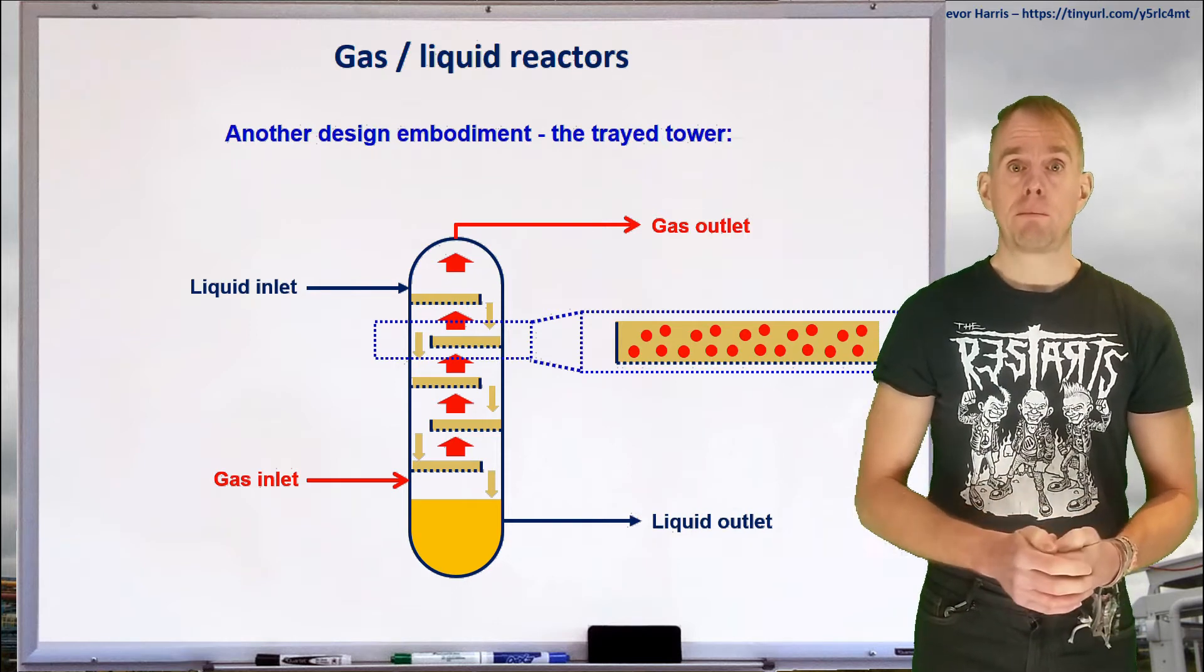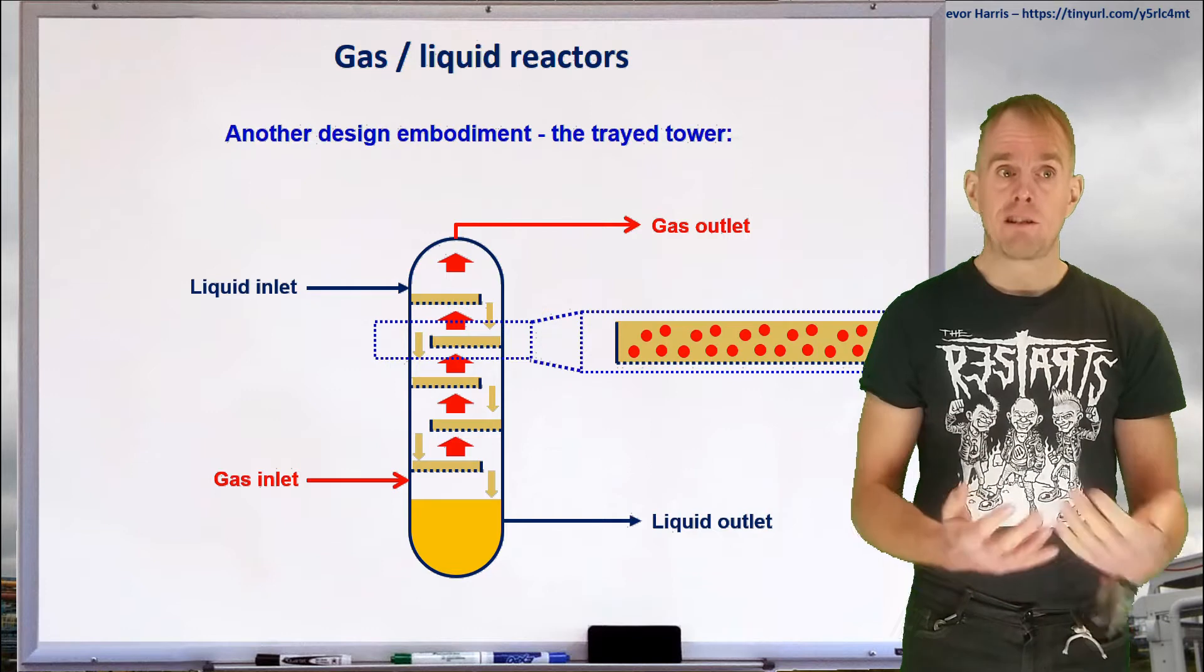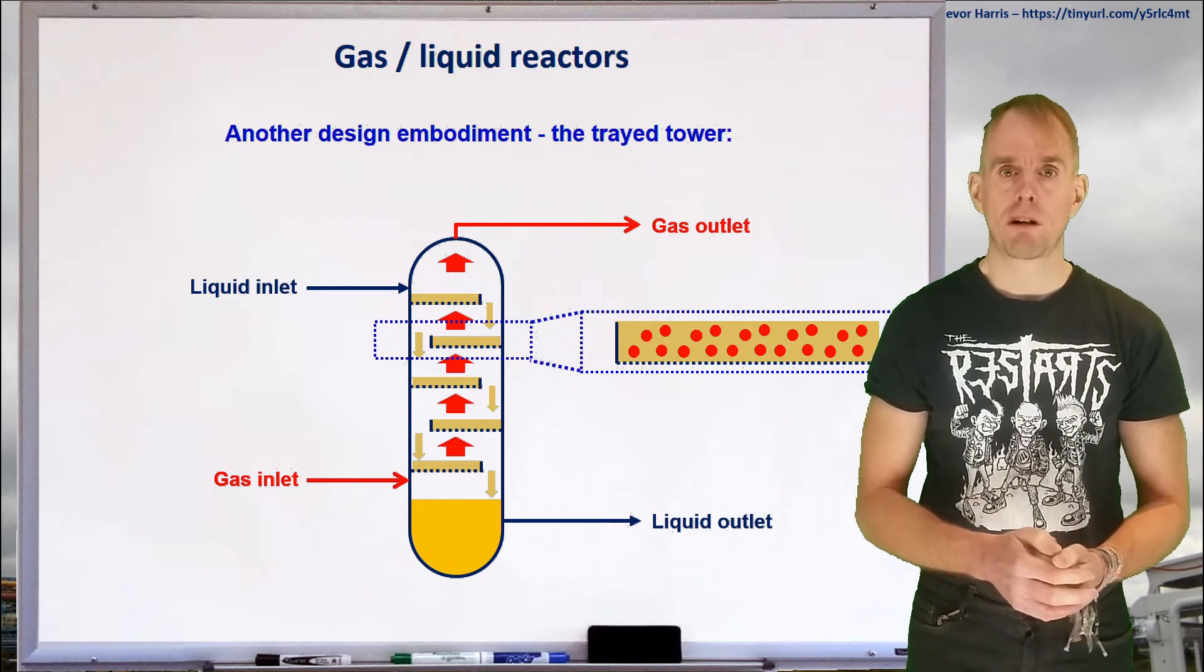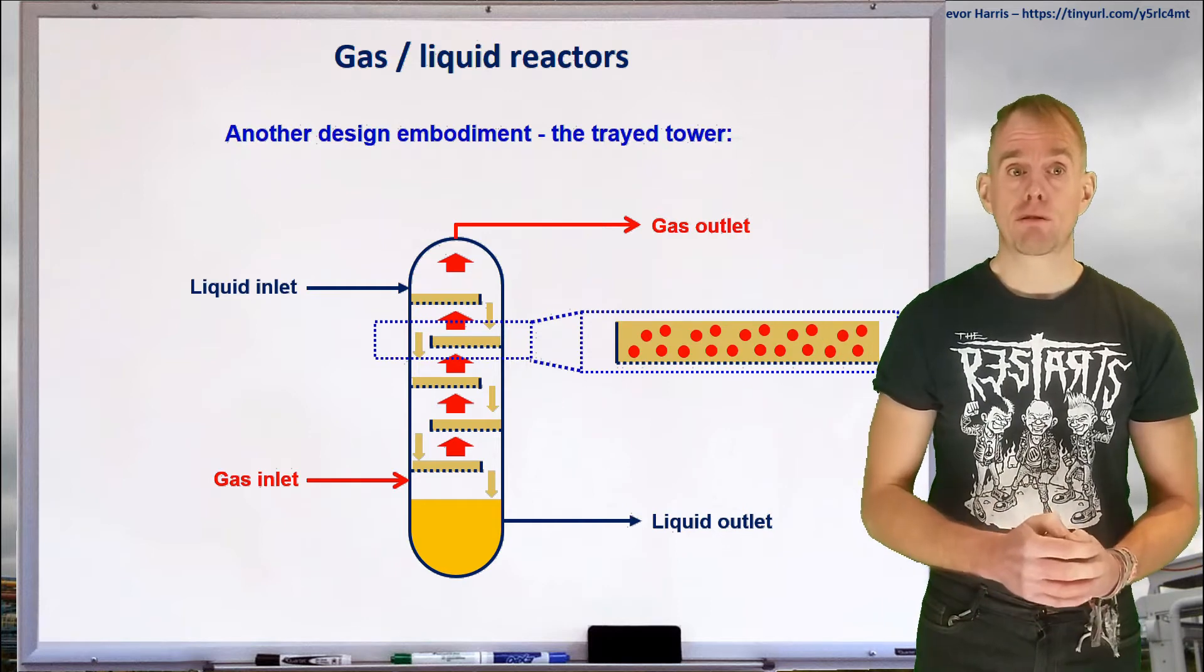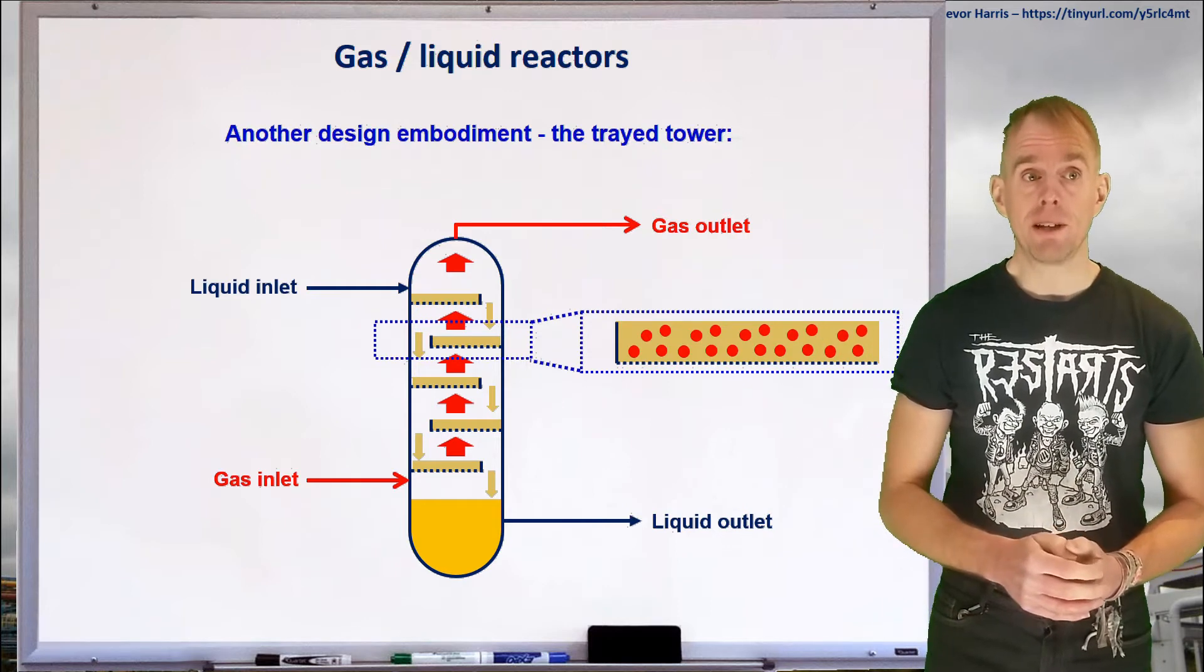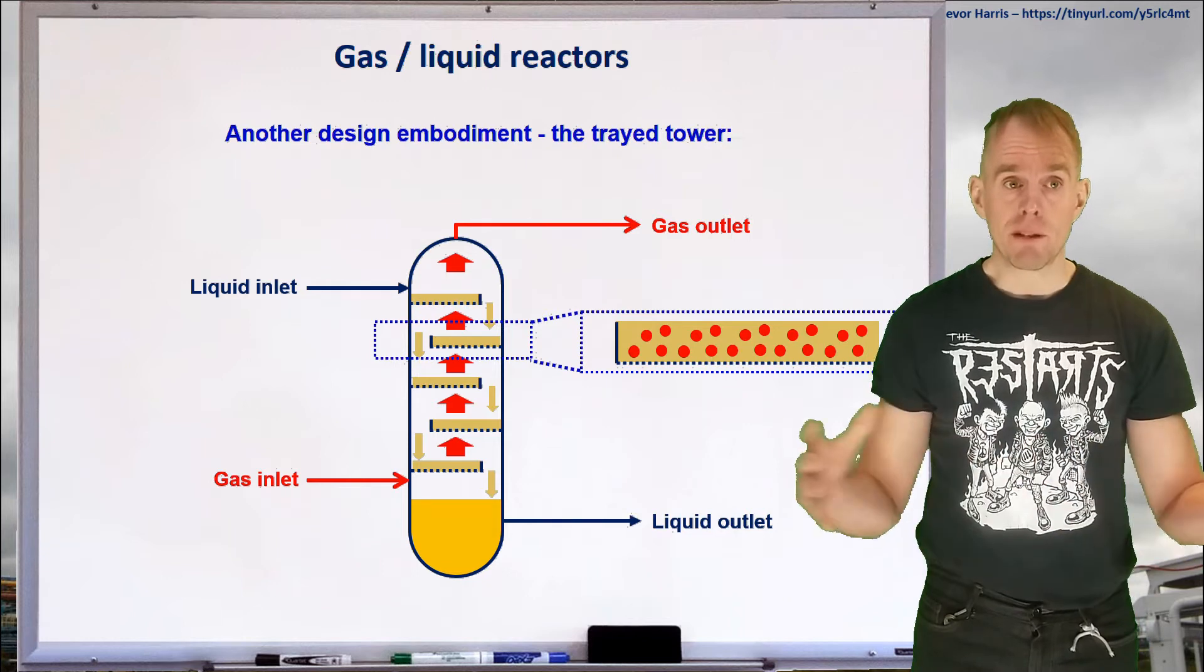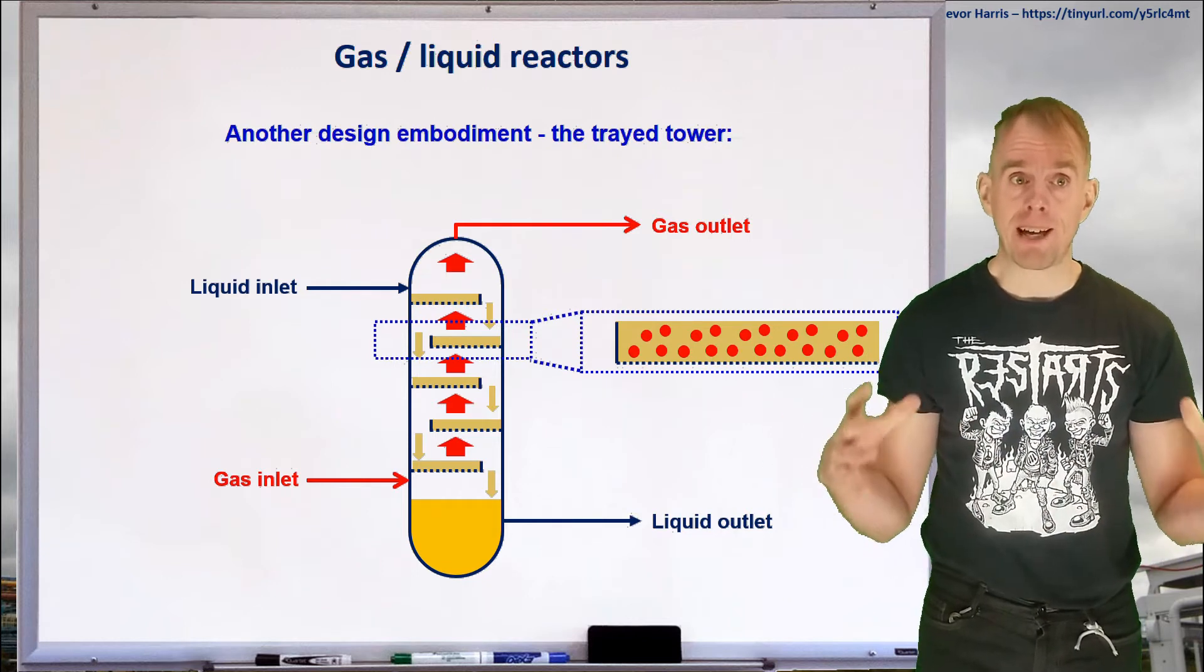So if, for example, you're trying to dissolve a soluble gas into a liquid, and a very good example of this is carbon dioxide scrubbing into an amine solvent, a tray embodiment of a reactive scrubber could be a very good way of doing this. And again, you determine your hydraulics by varying your tower diameter.